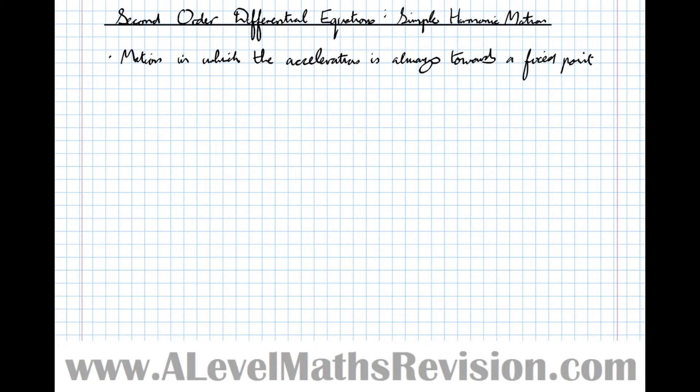The second feature is the magnitude of the acceleration is proportional to the distance or the displacement of the particle from the fixed point. So writing this down mathematically we get the acceleration d²x/dt² equals kx.